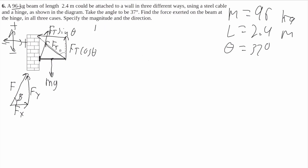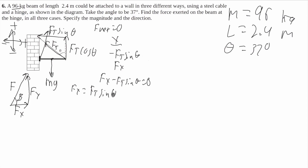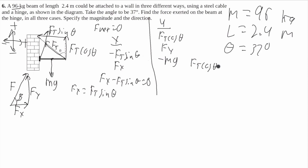So I'm going to use static equilibrium to solve. F net will equal zero. I'll start in the x: I have Ft sine of theta, which will be negative, and I have Fx from the hinge, so Fx minus Ft sine of theta is equal to zero, giving Fx equals Ft sine of theta. Now in the y, I'll have Ft cosine of theta which will be positive, Fy which will be positive, and mg which will be negative. So Ft cosine of theta plus Fy minus mg equals zero, giving Fy equals mg minus Ft cosine of theta.